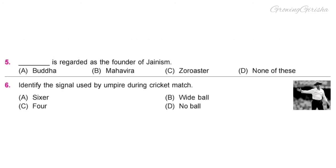Question 5. Dash is regarded as the founder of Jainism. Option B: Mahavira.